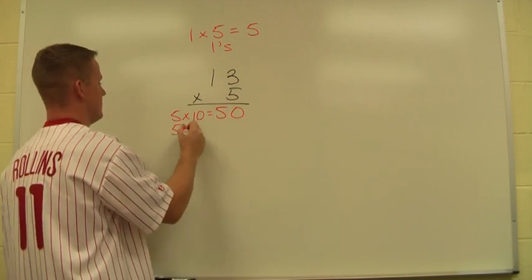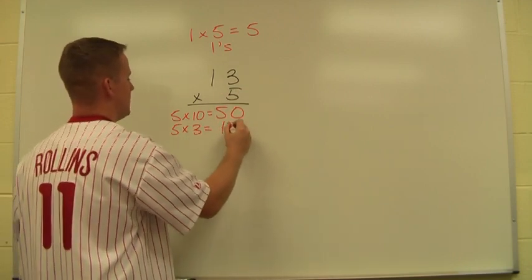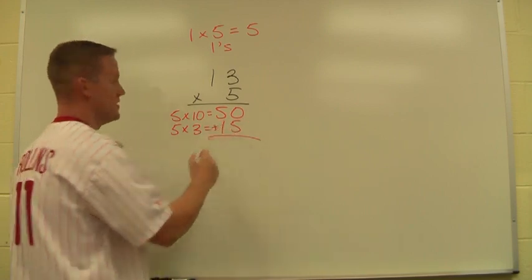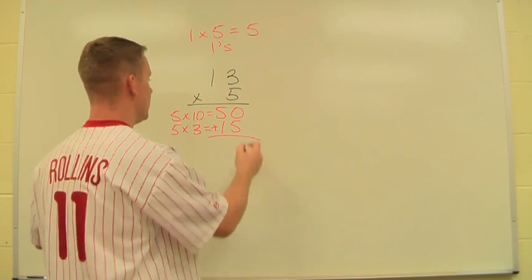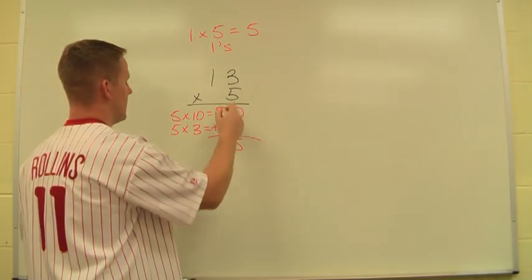And then 5 times 3, which is 15. And I add these back together. Again, we're not concerned about the decimal point until the very end. 0 plus 5, 5 plus 1.